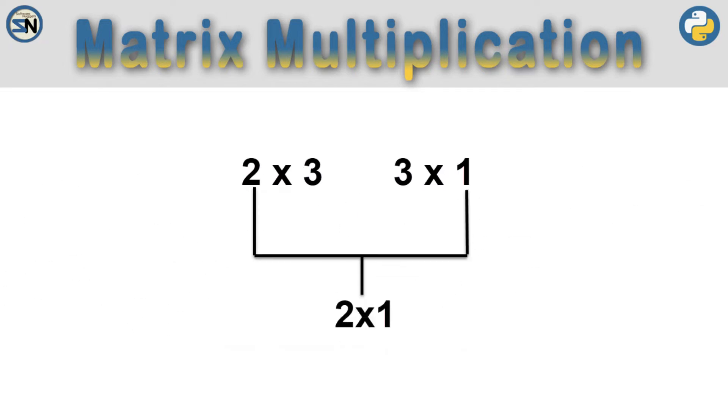The size of the result matrix when multiplying two matrices is determined by the number of rows in the first matrix by the number of columns in the second matrix.